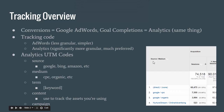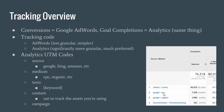In the picture here, you can see the source medium. In this account, it says direct slash none — direct means that they're directly typing in the website. The second one says Google CPC, which means they came from Google and that it was a paid click. The difference between those two is that Google CPC is paid traffic, whereas organic is traffic you didn't pay for.